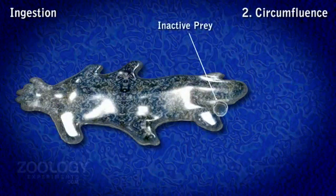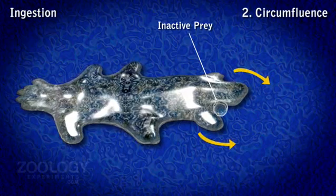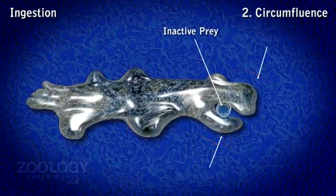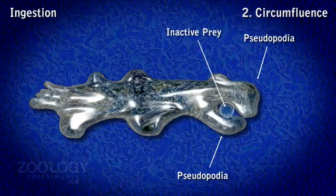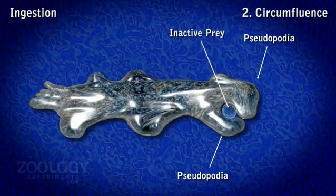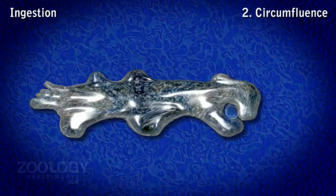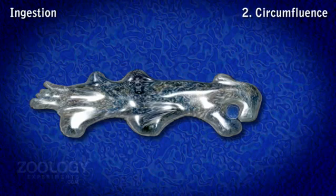2. Circumfluence: When amoeba comes in contact with a less active organism like bacteria, it extends its pseudopolia around the organism and envelopes it completely in a food vacuole within cytoplasm. The enveloping pseudoplasm always maintains intimate contact with the surface of prey.